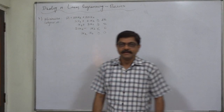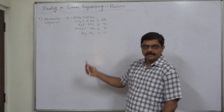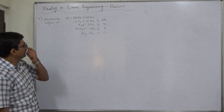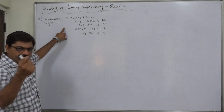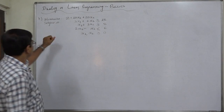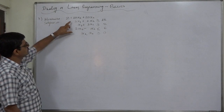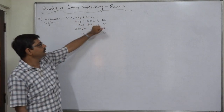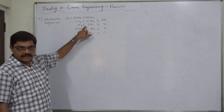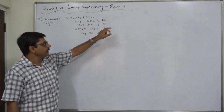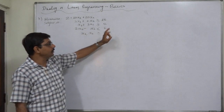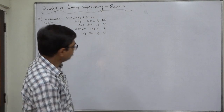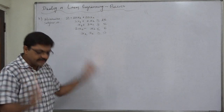Hello and welcome. Let us take another problem of linear programming to write its dual, but with a minor complication. The problem is: minimize z equals 10x1 plus 20x2, subject to 3x1 plus 2x2 greater than or equal to 18, x1 plus 3x2 greater than or equal to 8, 2x1 minus x2 less than or equal to 6, and x1 and x2 both are non-negative.